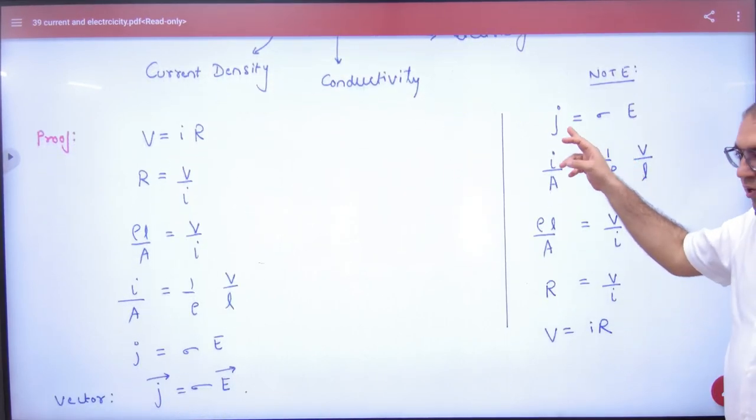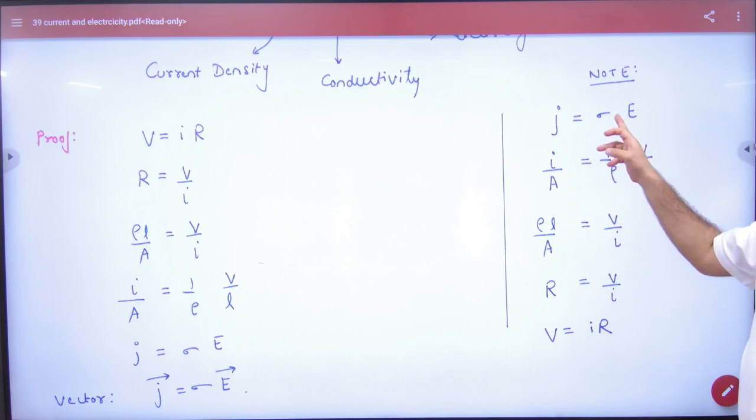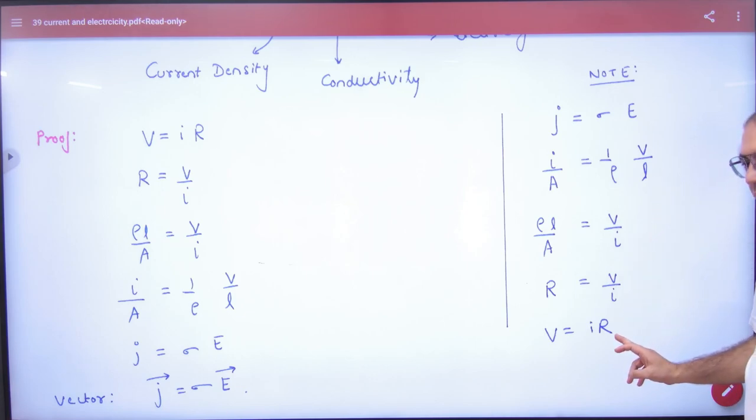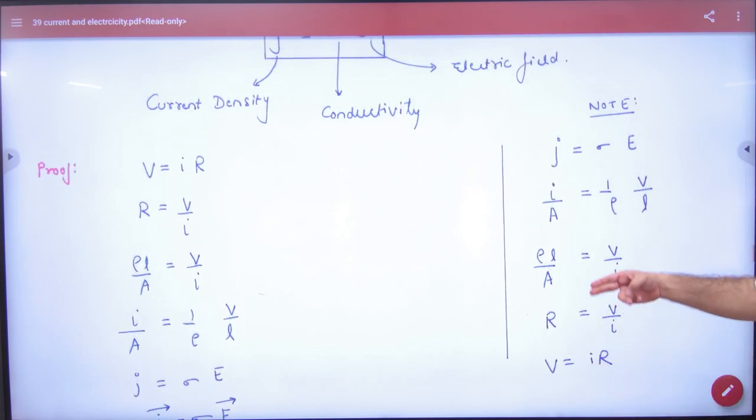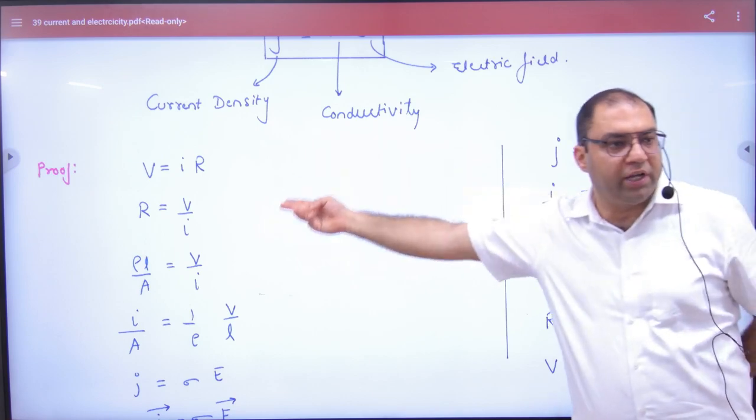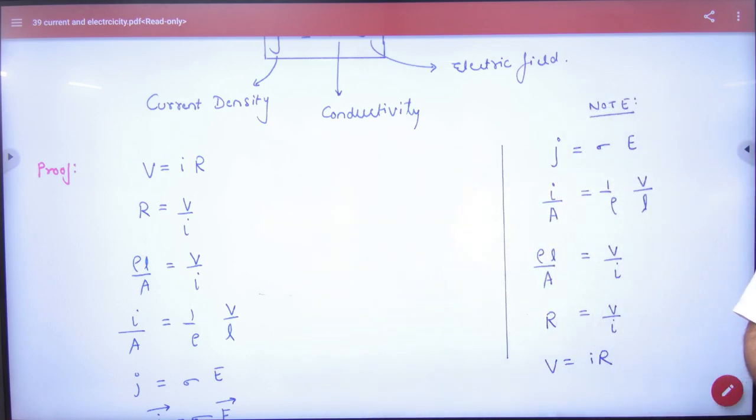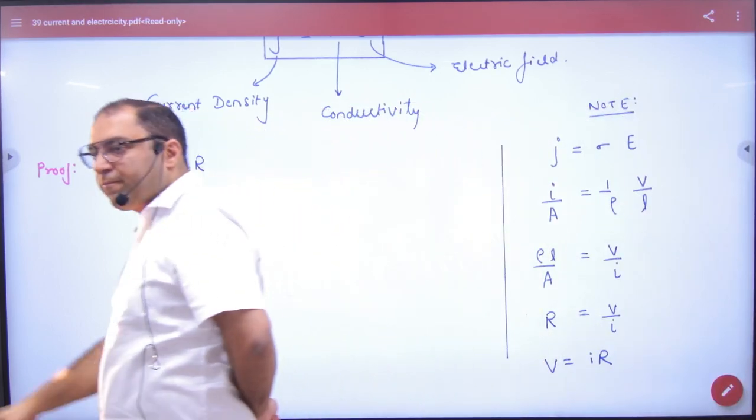You have to write J current by area, sigma one by rho, cross multiply rho L by A, V by I. What is R? Then you have to write all steps: one, two, three, four, five. You have to write it as ultra. What do you have to do? Just remember the formula, solve it first, then prove it. Answer is there. Okay, until now.